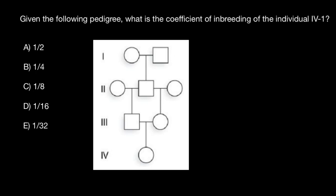We are talking about this individual IV-1. First of all, we have to find a loop here. The loop is here, including this person IV-1. Inbreeding means that person will get two alleles which are going to be identical by descent from both his father's side and mother's side.